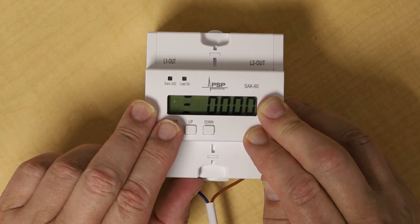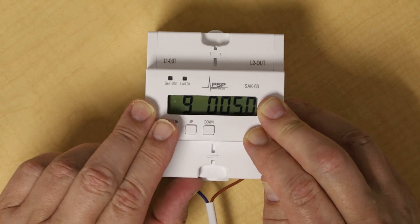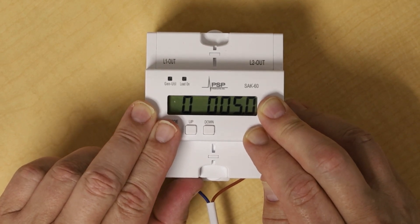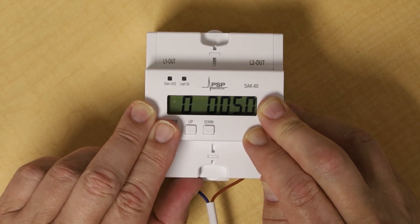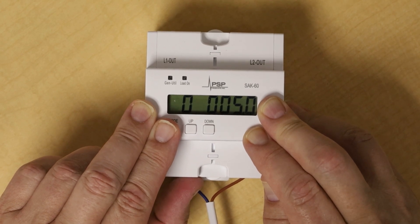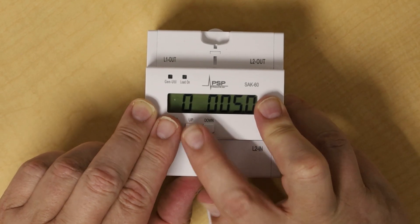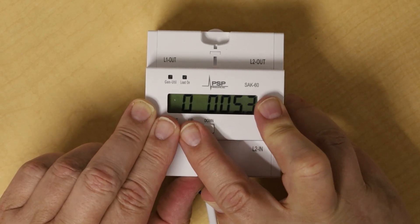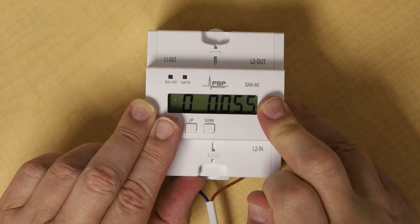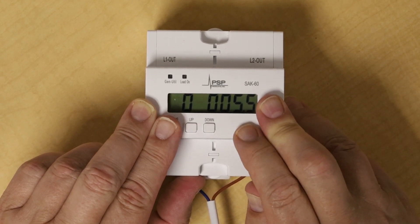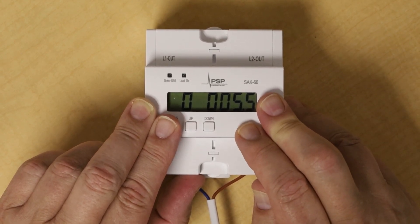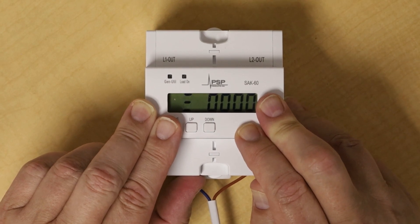Once you've set that, press the mode button again to scroll to 0. This will be set to 5 minutes by default. If you have additional SAK60s in the same system, you'd want to scroll up and set that to 5.5 or 6.0, and so on for additional SAK60s on the same system.